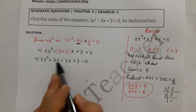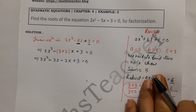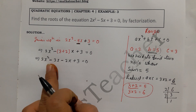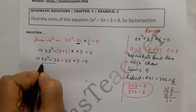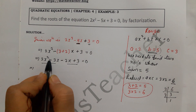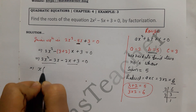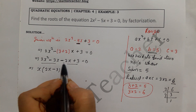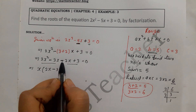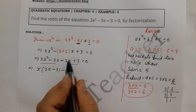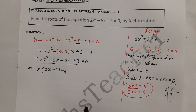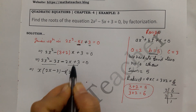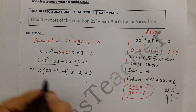So we have 2x squared minus 3x minus 2x plus 3 equal to 0. Check: minus 3x minus 2x gives minus 5x — correct. Now take the first two terms and last two terms. From the first two: x(2x minus 3). From the last two: take out negative 1, giving minus 1(2x minus 3) equal to 0. So we get (2x minus 3)(x minus 1) equal to 0.